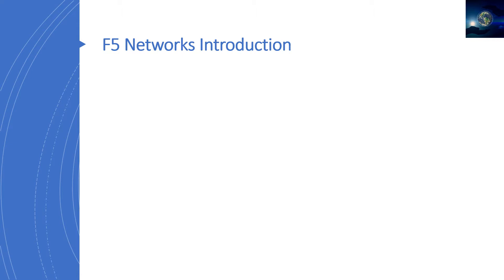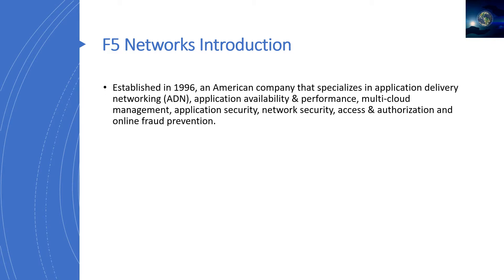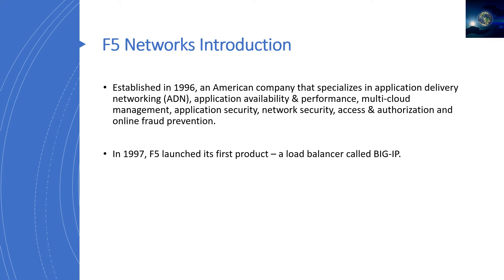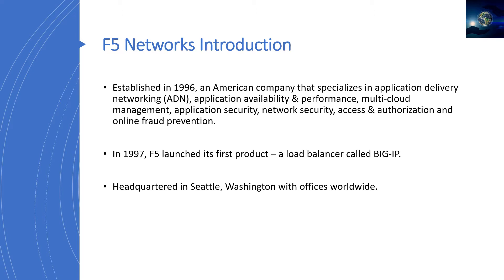Before we study anything about F5, it's good to have a background of the company — how it started, when it started, and what products it offers. F5 Networks was actually established back in 1996. It's an American company that specializes in application delivery networking, application performance, multi-cloud management, security, access and authorization, and online fraud prevention. F5 launched their first product in 1997, which they called Big-IP — essentially a load balancer, or application delivery controller. It's headquartered in Seattle, Washington, with offices worldwide.